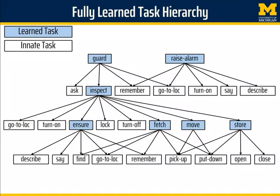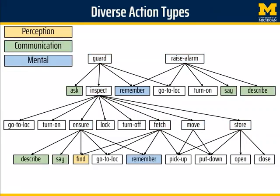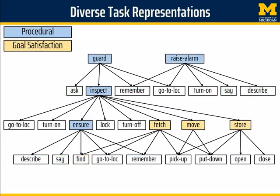In the end, Rosie has learned a complex hierarchical task of patrolling a barracks through natural language instruction in a single training episode. It learns a number of different types of actions including perception, communication, and mental actions. It also is able to compose tasks that are either following a procedure or satisfying a goal, and it is able to incorporate tasks that have both branches and loops together.